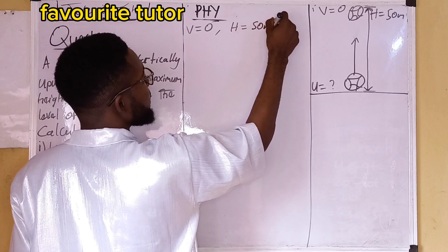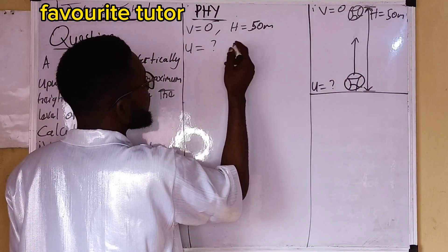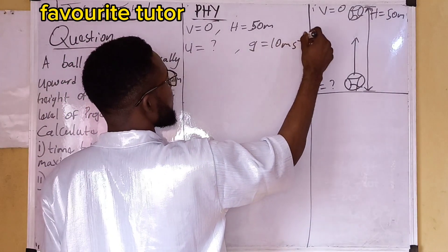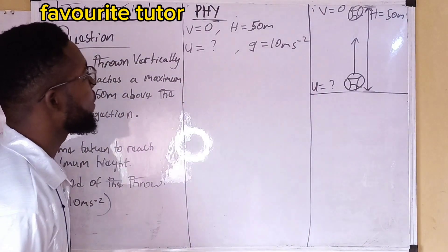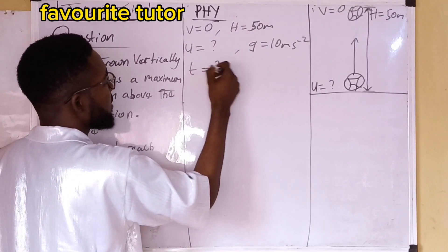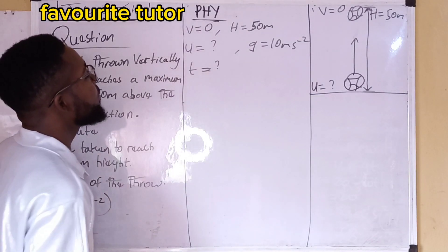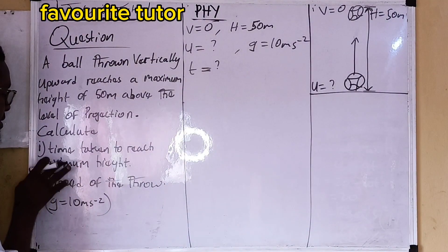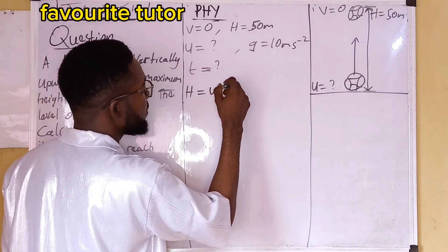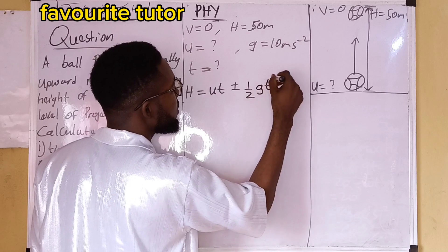So these are the parameters: final velocity is zero at maximum height; maximum height is 50 meters; initial velocity is unknown; acceleration due to gravity is 10 meters per second squared. We are looking for the time taken to reach maximum height. The required equation for this projectile motion question is: h = ut ± (1/2)gt².